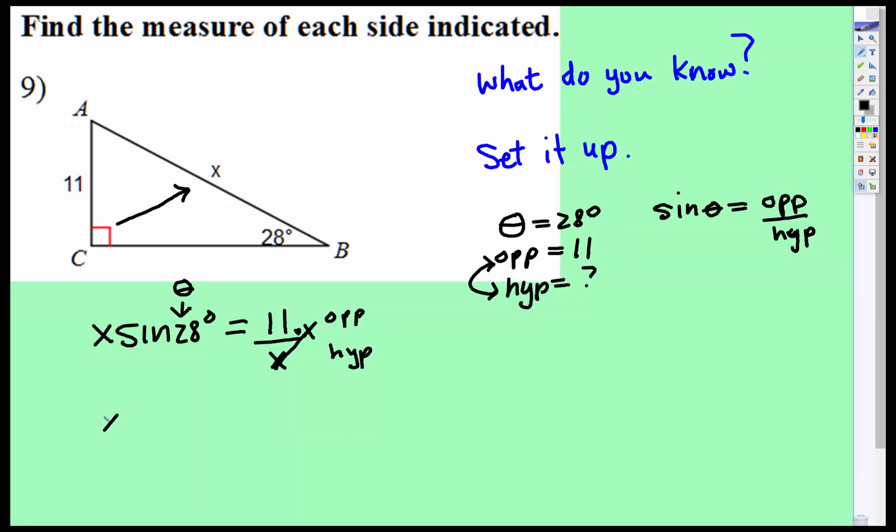And then we want to get x by itself, so how do you get rid of something that's attached by multiplication? Yep, you divide both sides. So we're going to divide both sides by sine of 28 degrees. Those cancel.